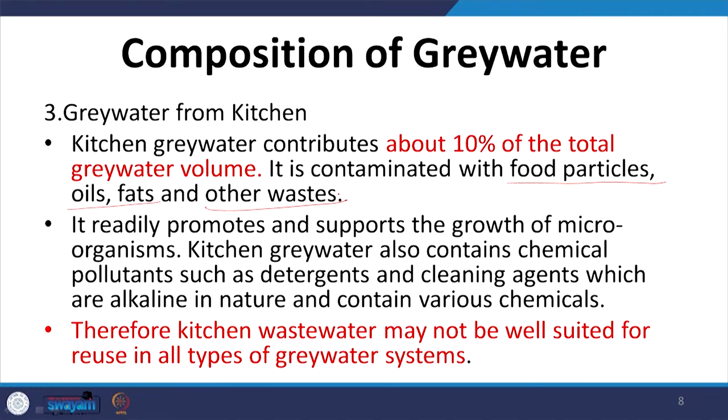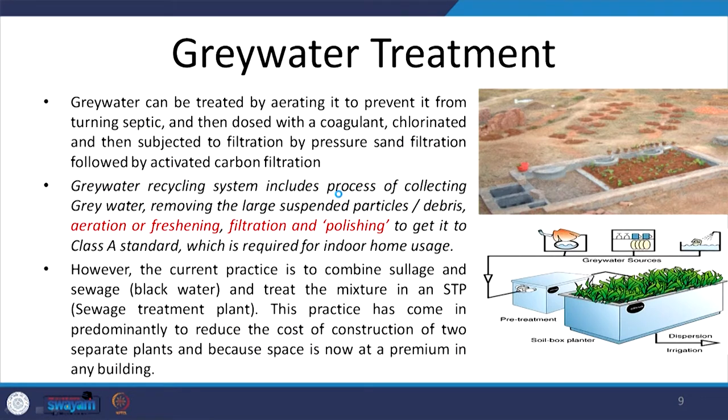The grey water from a household is a combination of all three sources. To optimize cost, one type may be left out — for example, grey water from cloth washing, which is heavily polluted with chemical contaminants, may be excluded from treatment depending on total water requirement. Ideally, we should be treating the entire wastewater, whether grey water or black water. The most commonly used term for these treatment plants is sewage treatment plant, or STP, even when we are only treating grey water.